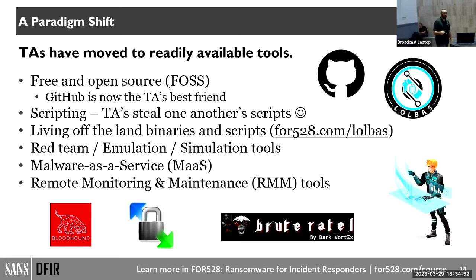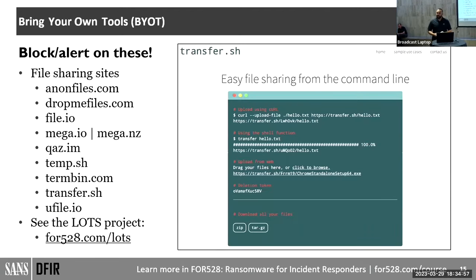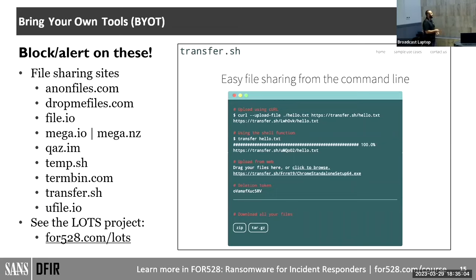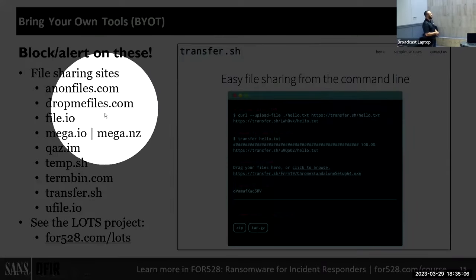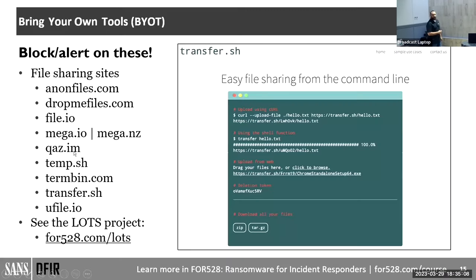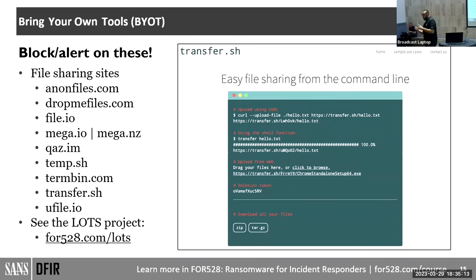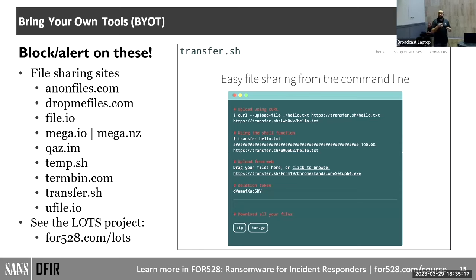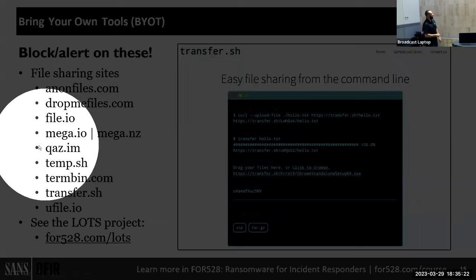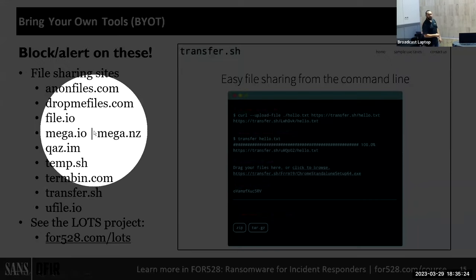It's unnerving because we expect to see RMM tools in our environments — but now when you see them, you have to worry why. Threat actors bring tools in via file sharing sites. The ones on this slide — block every single one of them and alert anytime someone tries to access them. If you see DNS hits to them, find out why. One in particular — Mega — is pretty much all bad.